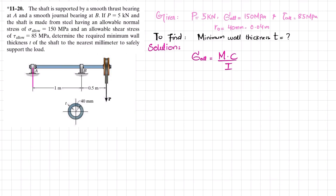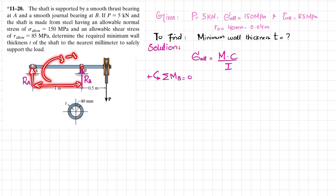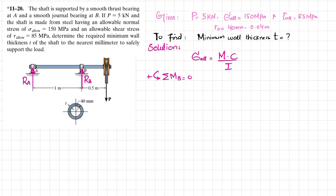Removing the thrust bearing gives reaction force R_A, and removing the smooth general bearing gives reaction force R_B. We find R_A and R_B using equilibrium conditions. Taking the sum of all moments about point B equal to zero, with counterclockwise positive: R_A times its perpendicular distance of 1 creates a clockwise moment, and R_B times its perpendicular distance creates another clockwise moment, both negative.